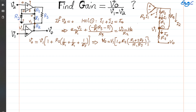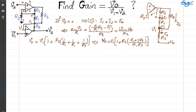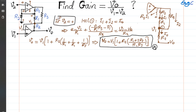So the outcome is Vout as a function of V1 is shown here. This is the first equation I am looking for — let's call this equation A. For the second one, let's assume V1 is 0 and V2 is applied. This was the case for V2 equals 0; now let's do the case where V1 is 0.